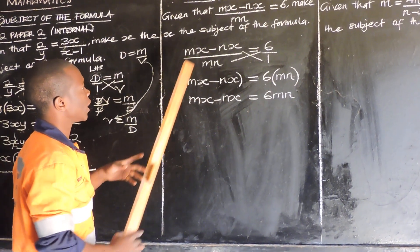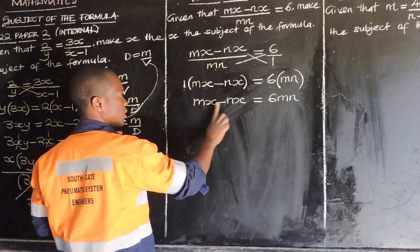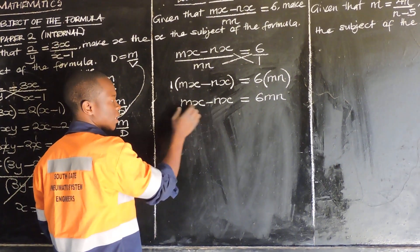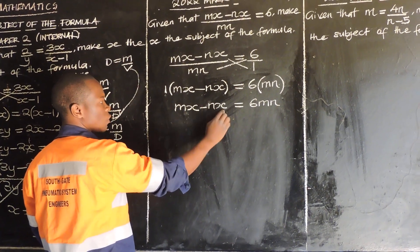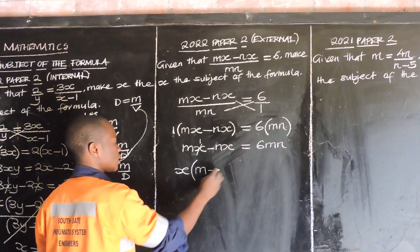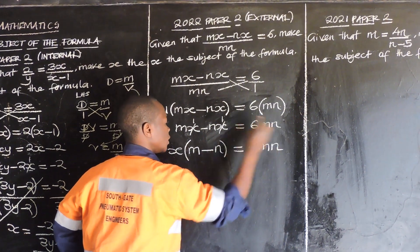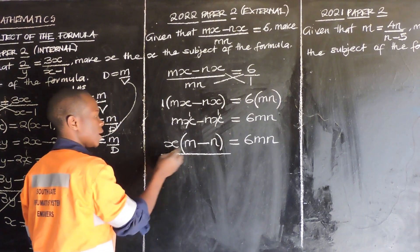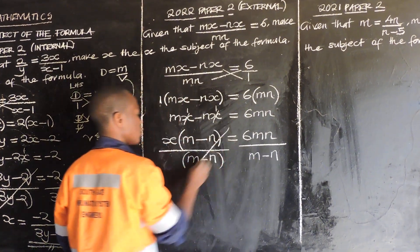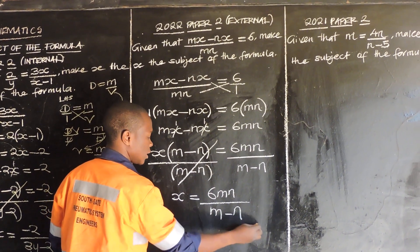Since we are making x the subject, we notice both terms on the left already have x. So there is no need to transpose. We just factorize directly. x is the common factor: x open brackets, x into x is 1, 1 times m gives m, minus 1 times n gives n, equals 6mn. Divide both sides by m minus n. So x is equal to 6mn over m minus n. That is our answer.